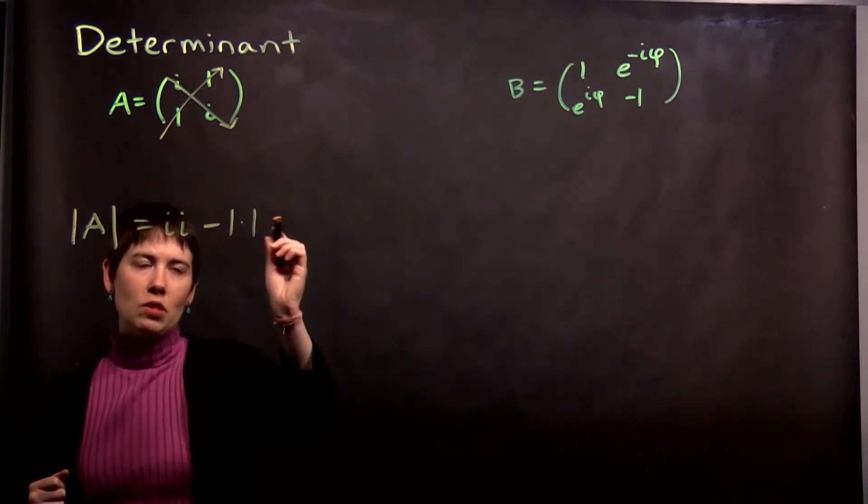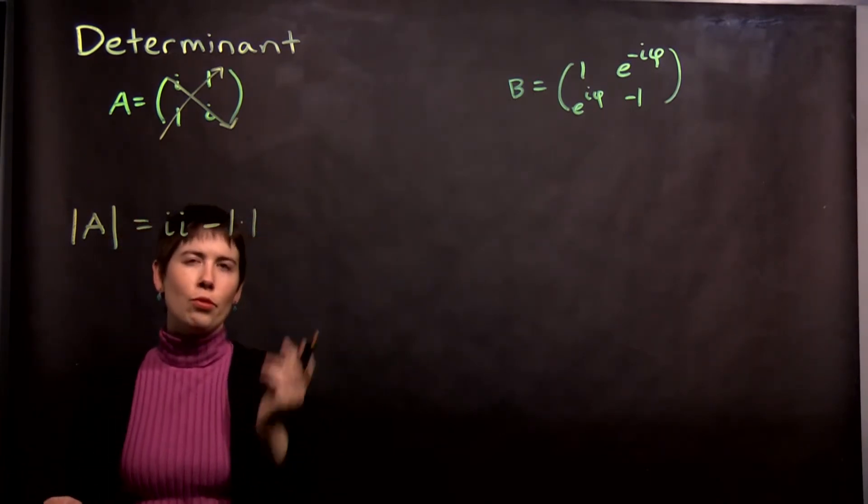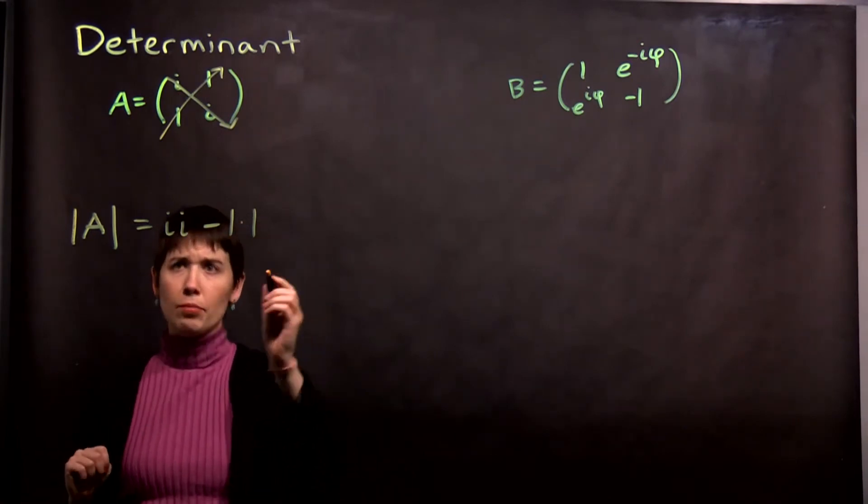and then minus 1 times 1. And I'm going to write it explicitly 1 times 1, and I'll put the dot there to know it's not 11. And then we need to simplify.